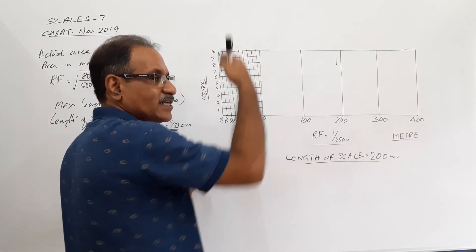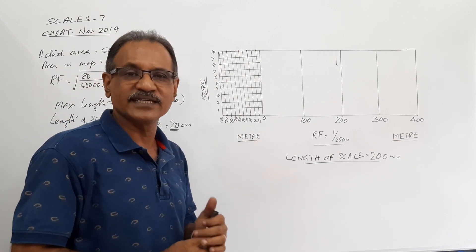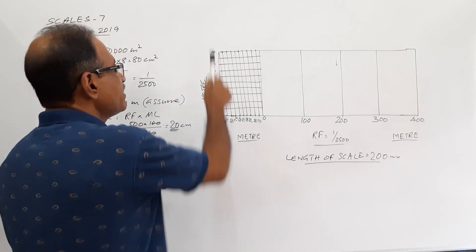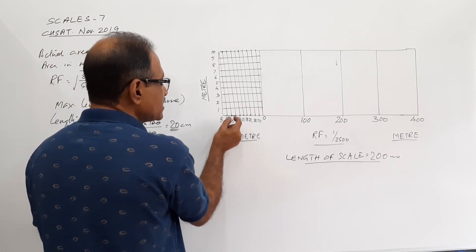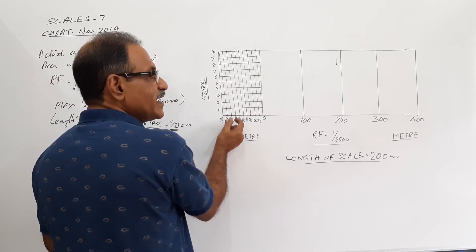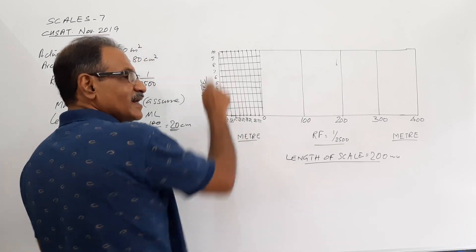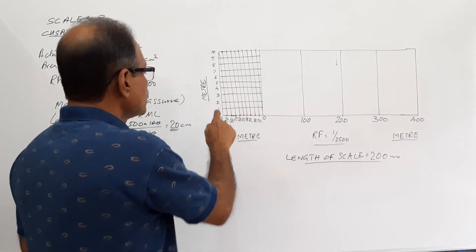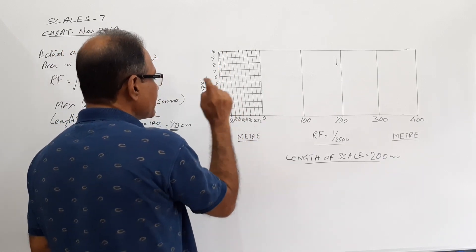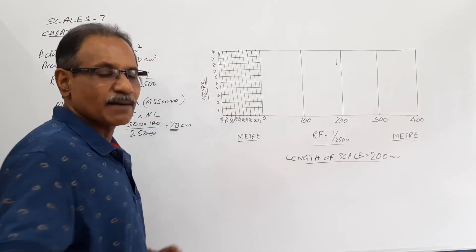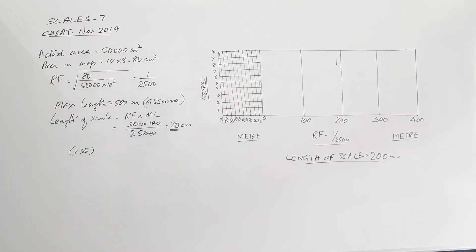Then I draw inclined lines — you know the need of drawing inclined lines in diagonal scales. I divide the vertical height into 10 equal parts because each division is 10 meters, so that each vertical division represents 1 meter: 0, 1, 2, 3, 4, up to 10. This completes the construction of the diagonal scale.